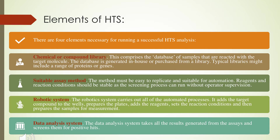Elements of HTS: there are four major elements involved in a successful HTS analysis. The first element is the chemical or compound library — the database of samples being reacted with the target molecule. This database is generated in-house or can be purchased. Typically, these libraries will have a range of proteins or genes. Once we have the compounds, we have to perform the assay. The suitable assay method should be followed, and it should be easy to repeat and suitable for automation.